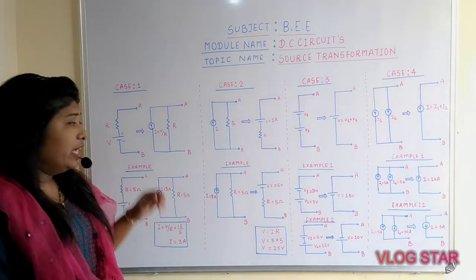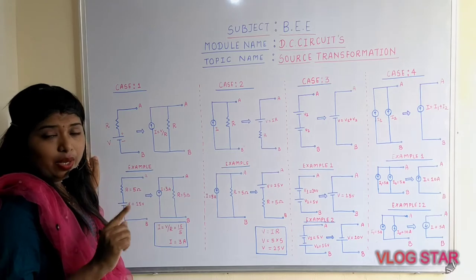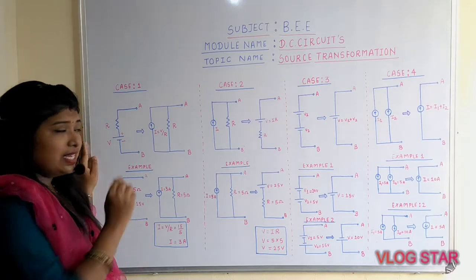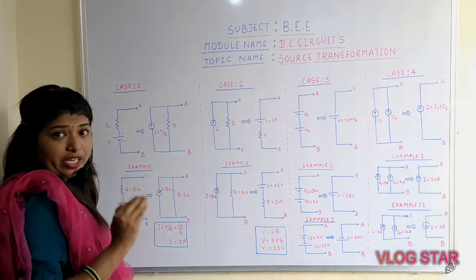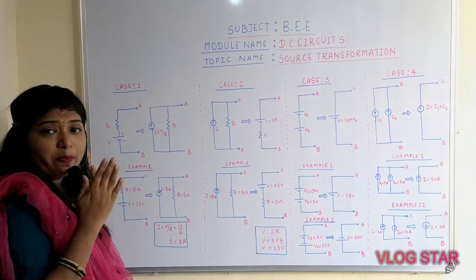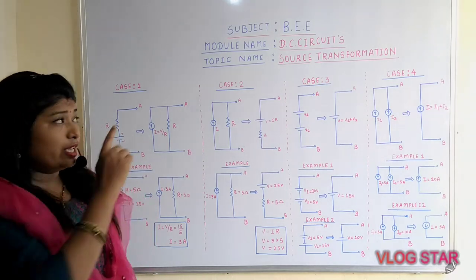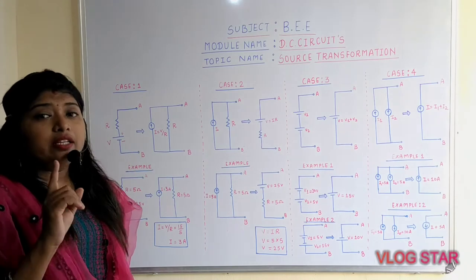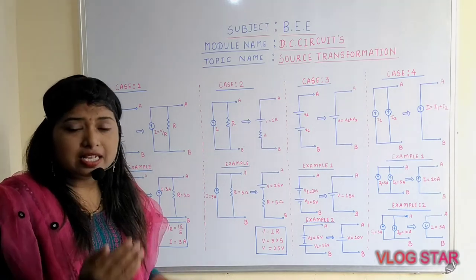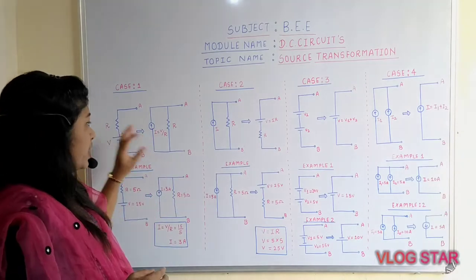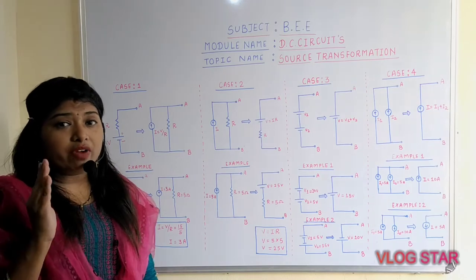What is case number one? If the voltage source is in series with the resistance, then it can be converted into a current source parallel with the same resistor. That is the definition of case number one in source transformation.